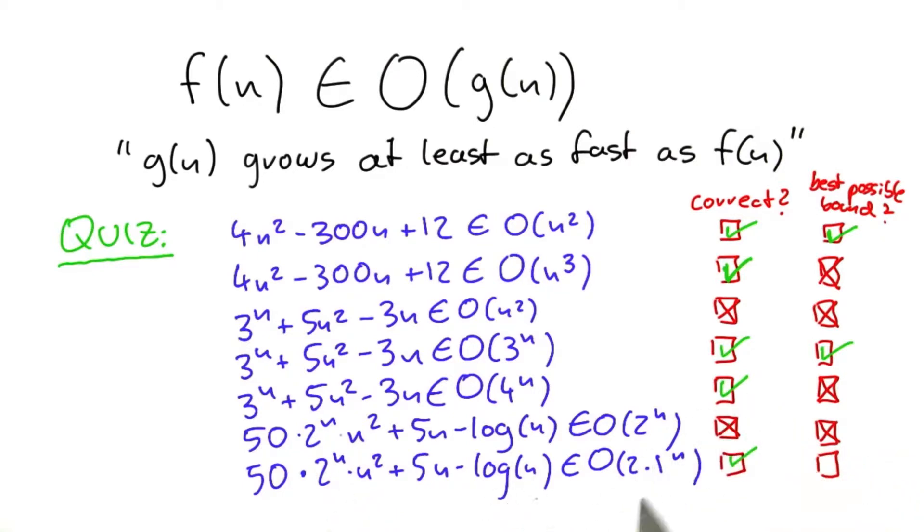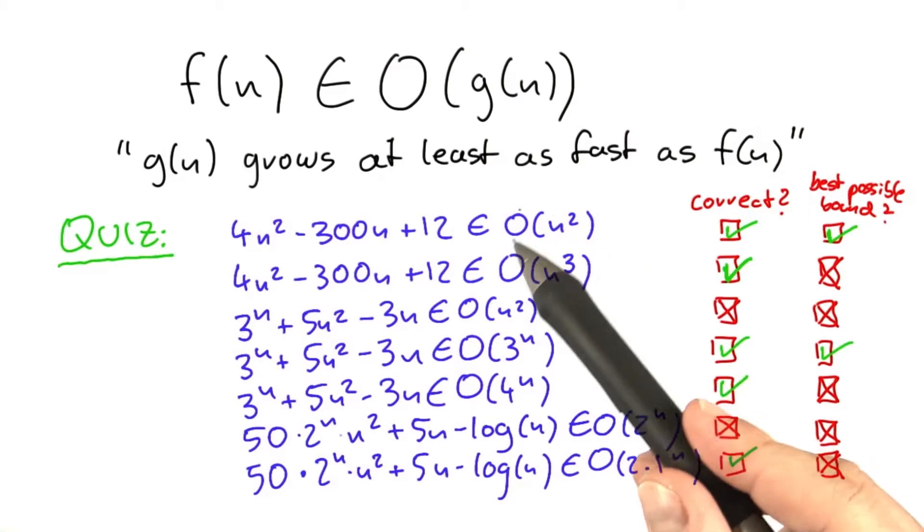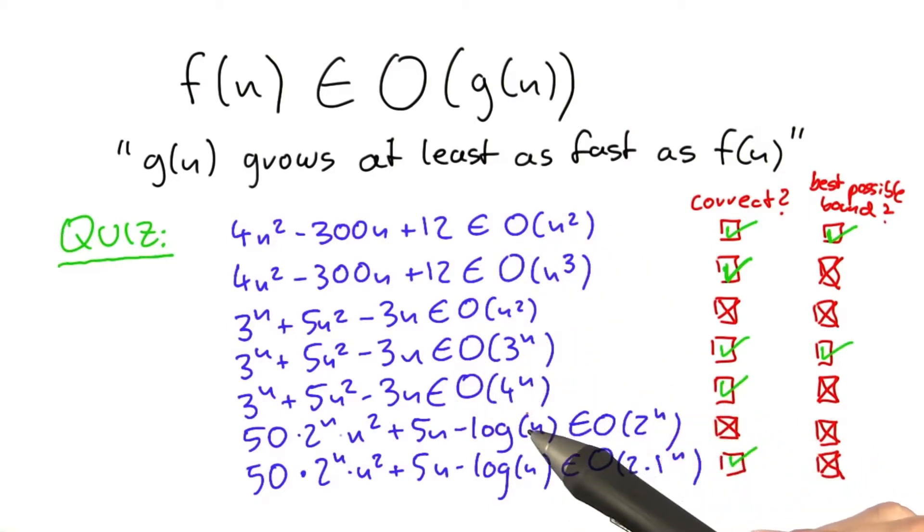But it is not the best possible one because the best possible one would be 2 to the power of n times n squared and not 2.1 to the power of n, which grows much faster. So as you can see, O-notation is simply about looking at which part of a function grows the fastest. And then it's a very convenient way of actually describing the growth of that function while ignoring details that are a bit distracting and not necessary for the analysis that we are going to do in this course.